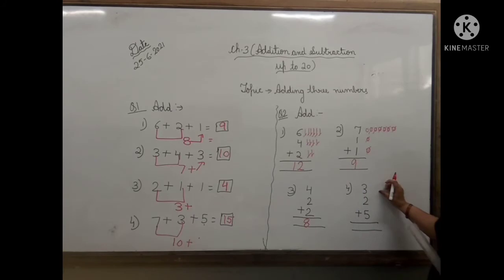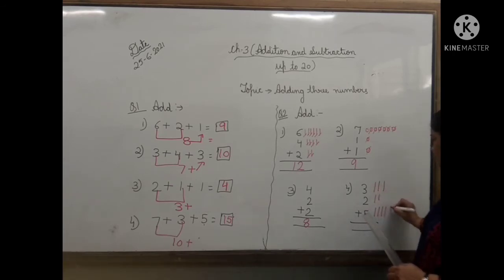Now the next one. 1, 2, 3, 4, 5, 6, 7, 8. Number 4: 1, 2, 3, 4, 5. Now count all the lines. 1, 2, 3, 4, 5, 6, 7, 8, 9, 10. Answer will be 10.